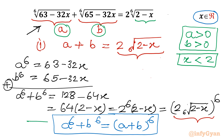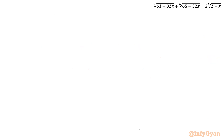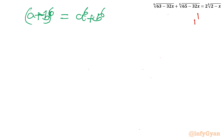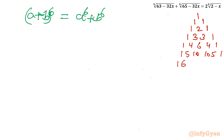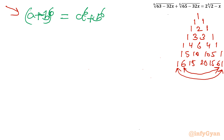So let us consider the equation a⁶ plus b⁶ equals (a plus b)⁶. Because the power is 6, I need to know the coefficients, so I will use Pascal's triangle. Writing out the rows: 1; 1 1; 1 2 1; 1 3 3 1; 1 4 6 4 1; 1 5 10 10 5 1; and the required row is 1 6 15 20 15 6 1. While expanding, I will group the first and last coefficients, take 6 common from the second and second-last terms, 15 common from the next pair, and leave the middle term as is.